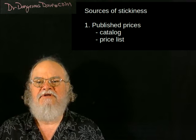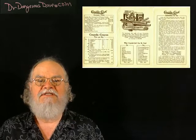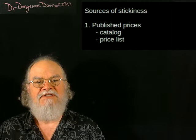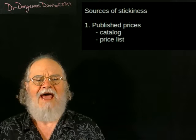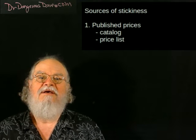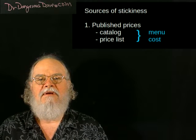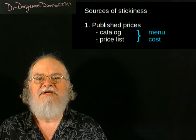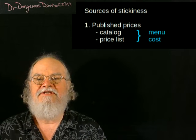First, in many markets, firms publish prices for goods or services in one form or another. Historically, firms printed physical catalogs and price lists every six months to a year, and would typically guarantee those prices until the next catalog or price list came along. Printing an unplanned new catalog or price list would increase costs. These unplanned costs are known as menu costs — a term that comes from periods of rapid price changes when restaurants had to print new menus frequently. More on that in another video when we talk about hyperinflation.